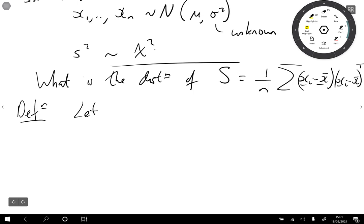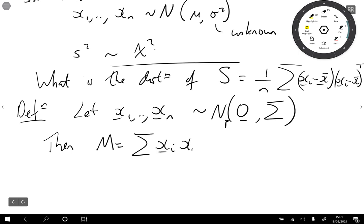So let's let x1 up to xn be iid samples from a normal distribution, length p, zero mean vector and covariance matrix sigma. Then the quantity M, which is the sum of xi xi transposed, so this, just to be clear, is a p by p matrix.